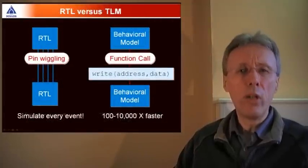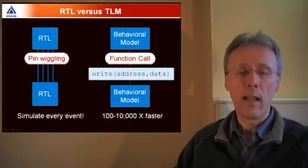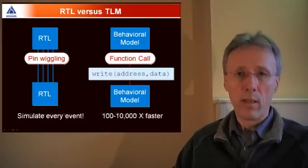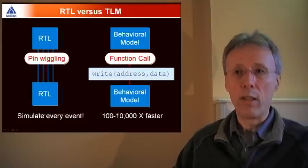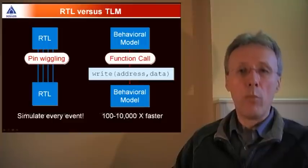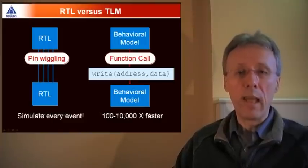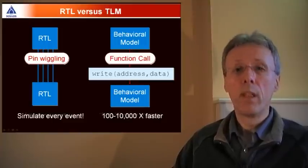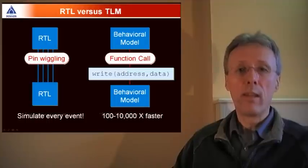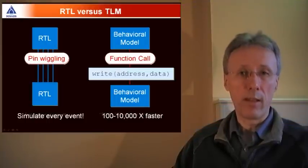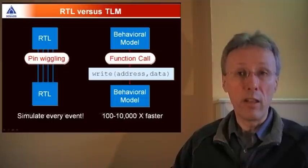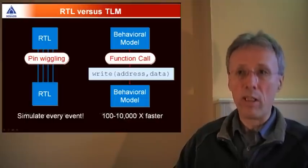The key point about transaction level modelling is that it accelerates simulation. So comparing RTL with TLM side by side, RTL models communicate by wiggling pins over a period of time. Transaction level models communicate with simple function calls, and that makes transaction level models much faster, typically several orders of magnitude faster than RTL for the purposes of simulation.